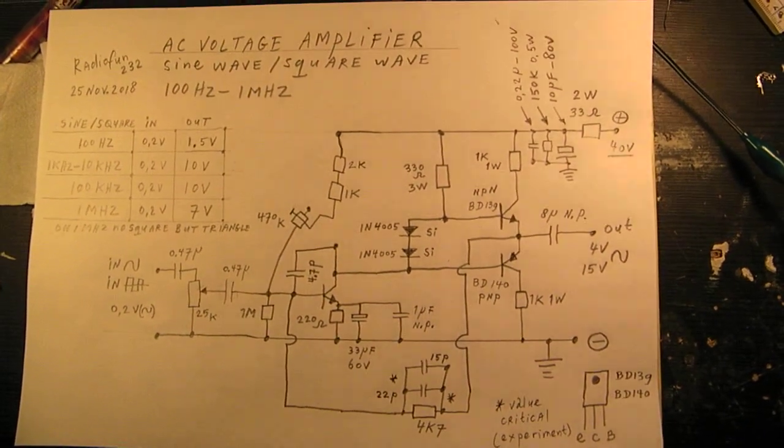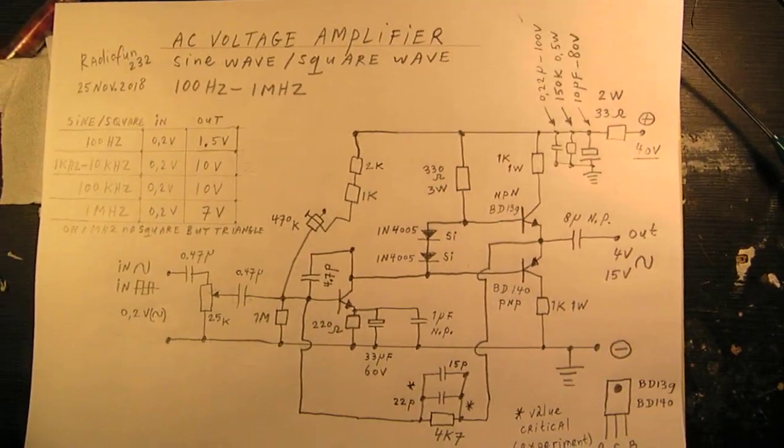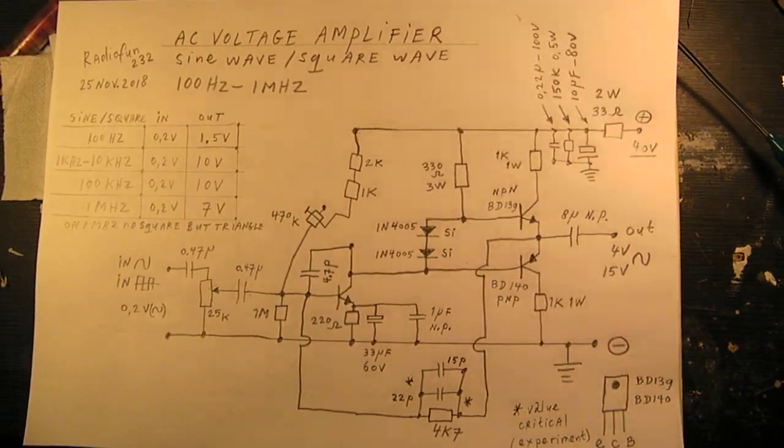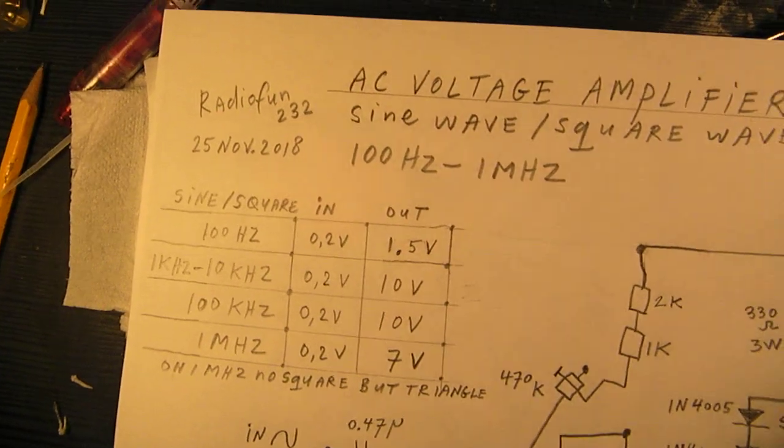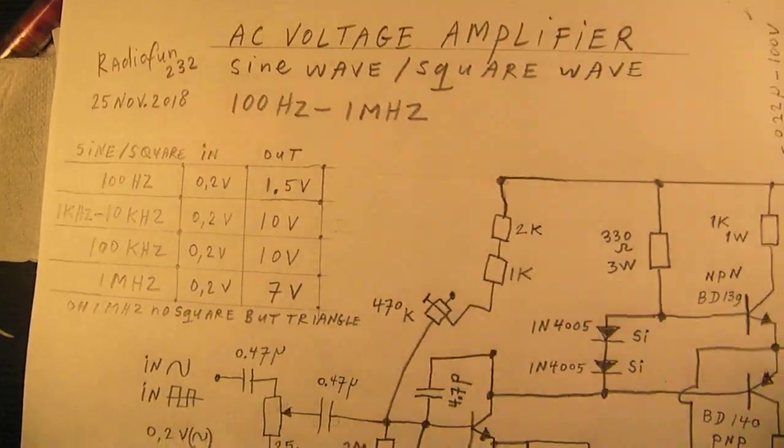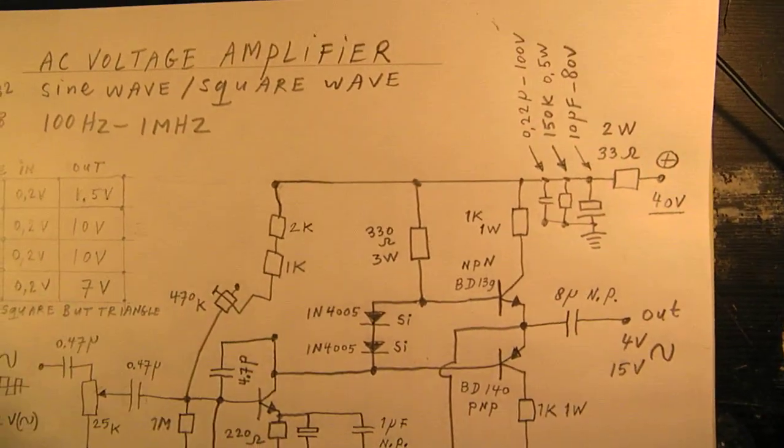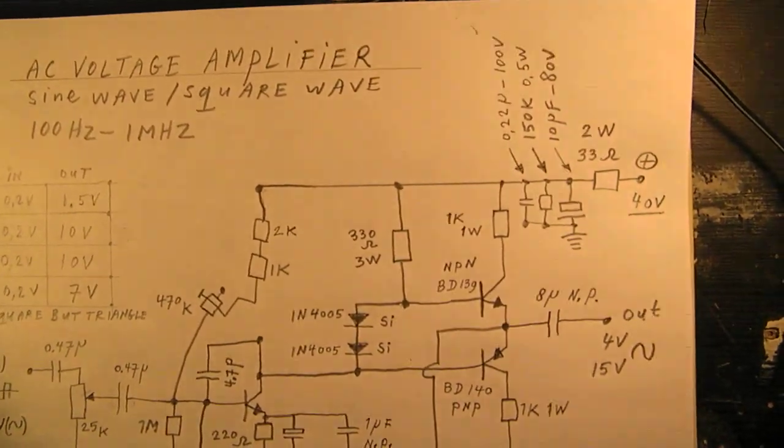It's an AC voltage amplifier. It can amplify a sine wave and square waves in the range of 100 hertz up to 1 megahertz. In fact it's a kind of audio amplifier, though there are a lot of adaptations.